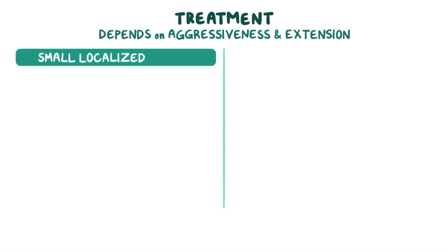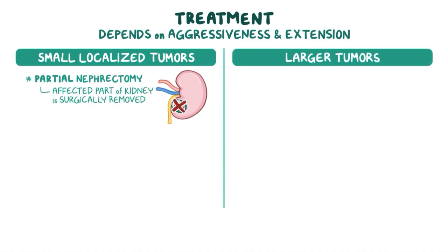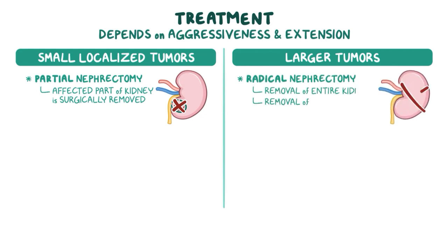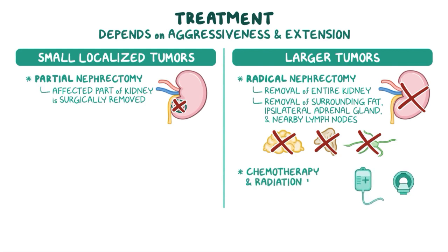Treatment for renal cancer depends on its aggressiveness and extension. Small, localized tumors can be treated with partial nephrectomy, which is when the affected part of the kidney is surgically removed. For clients with larger tumors, the treatment of choice is radical nephrectomy, or removal of the entire kidney, along with the surrounding fat, the ipsilateral adrenal gland, and nearby lymph nodes. This surgical procedure is sometimes followed by chemotherapy and radiation therapy to kill the remaining cancer cells.